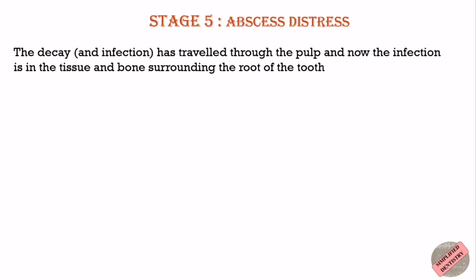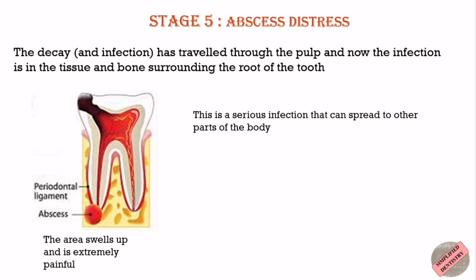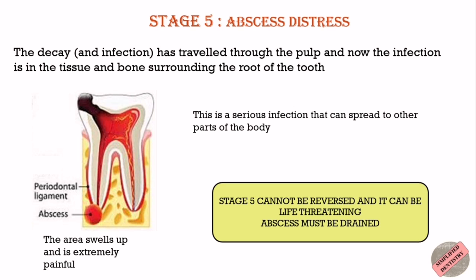Stage 5 is abscess distress. Till this stage, the decay and infection has traveled through the pulp and out the end. In the final stage, it drills through the tip and now the infection is in the tissue and bone surrounding the root of the tooth. The area swells up and it's exceptionally painful. This is a serious infection that can spread to other parts of the body. An abscess originating in a tooth can also be fatal. So stage 5 cannot be reversed and can be life-threatening. The abscess must be drained. A root canal or antibiotics may be required, and sometimes the tooth needs to be pulled. Proper care must be taken during the initial stages so that cavity formation does not lead to abscess formation.